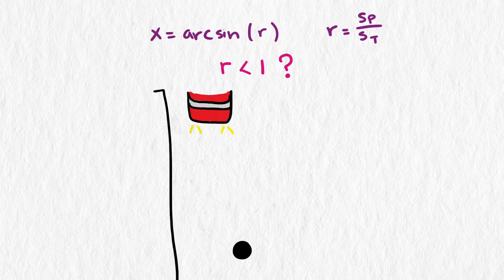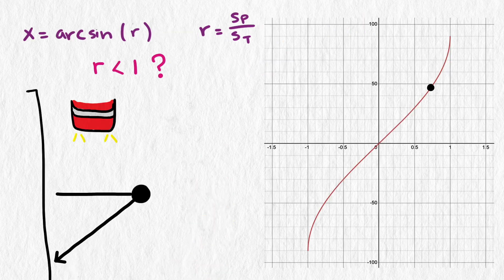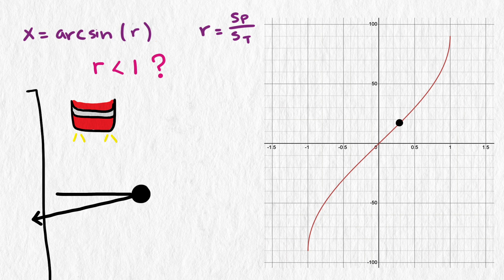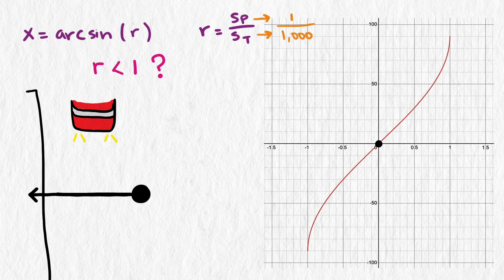But what if r is less than one? Then the pedestrian is going slower than the truck, and the optimal angle gets closer and closer to being a direct path to the curb as r approaches zero. That means in a situation when the truck is much faster than the pedestrian, the optimal solution is to basically head directly to the curb.